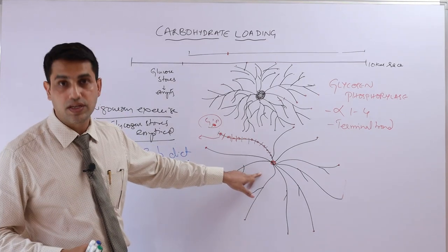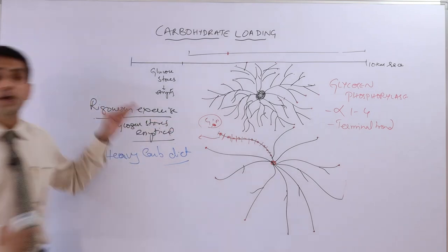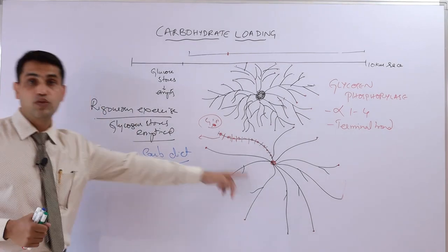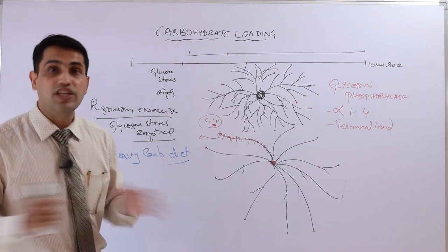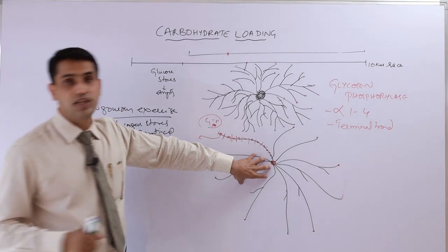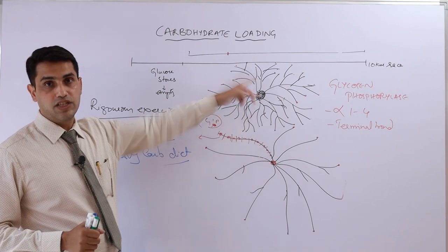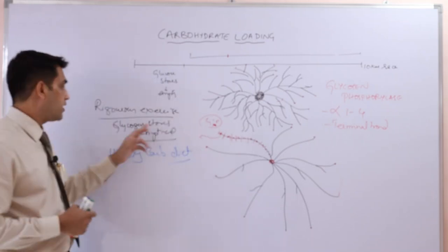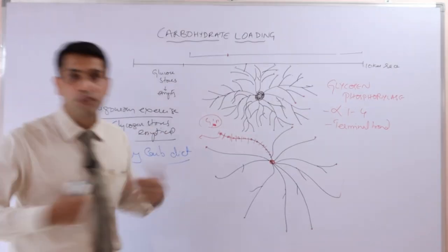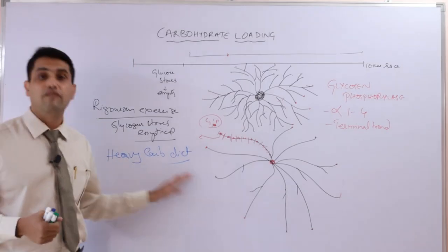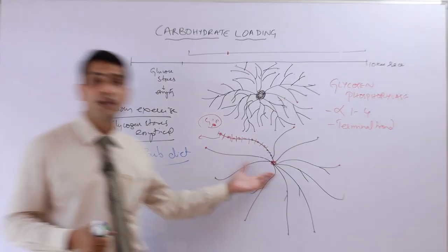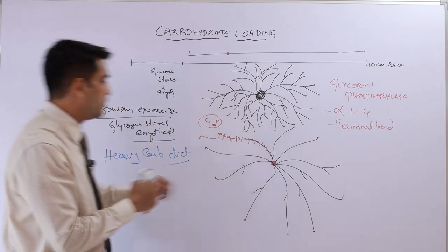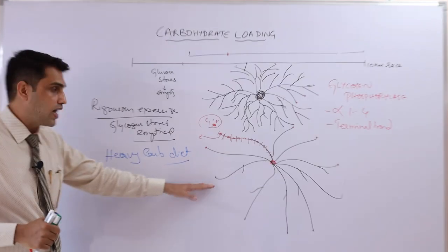When you do rigorous exercise followed by a high carb diet, you create a glycogen molecule with long chains but very few branches. The body doesn't have time to prepare that many branches. So before races, endurance athletes do rigorous exercise to empty their glycogen stores, then take a very high carbohydrate diet, which immediately produces glycogen with very few branches.